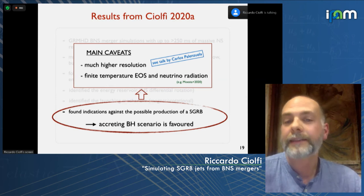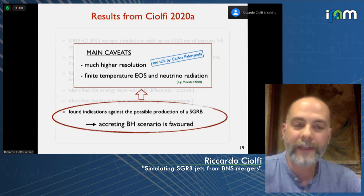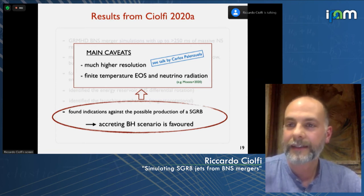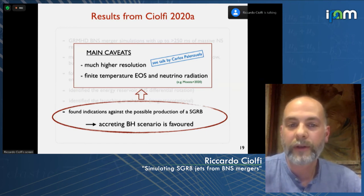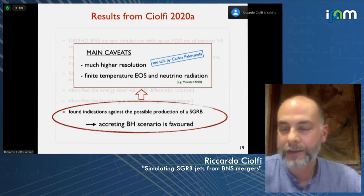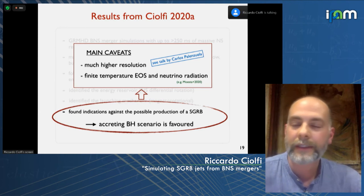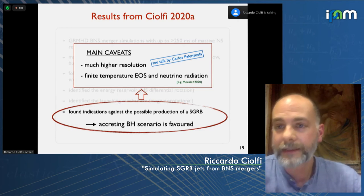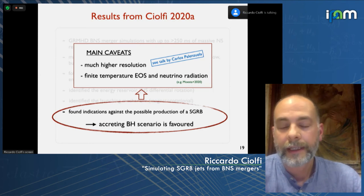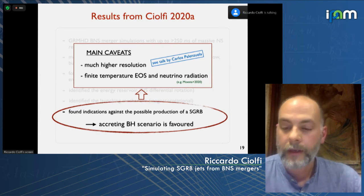We favor the black hole scenario so far, but to really answer the question we need fully or much better resolved magnetized binary star merger simulations also with a finite temperature equation of state and a reliable neutrino transport. These are requirements also for better investigating the black hole disk scenario. Along with other possibly less urgent aspects like better initial magnetic field configurations, neutron star spins, or the possibility of phase transitions.